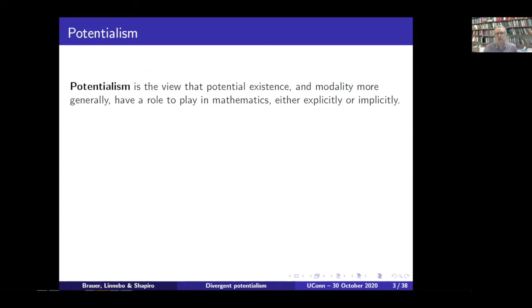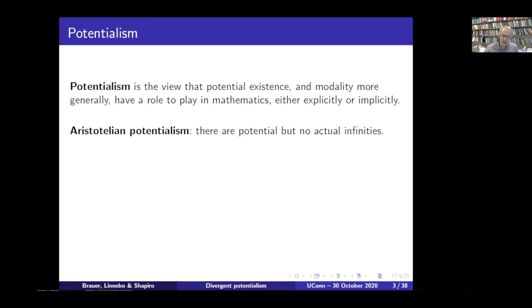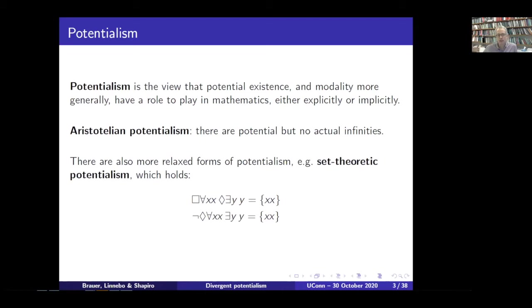Potentialism is the view in the philosophy of mathematics that potential existence and modality more generally have roles to play in mathematics, either explicitly as on the previous slide, or implicitly. The most famous version of potentialism is of course the Aristotelian one — that there are potential infinities but no actual infinities. But there are also more relaxed forms of potentialism.